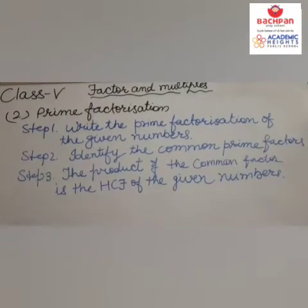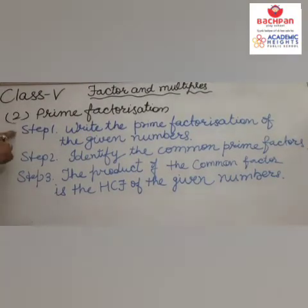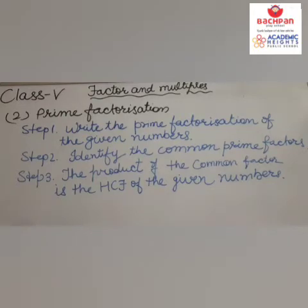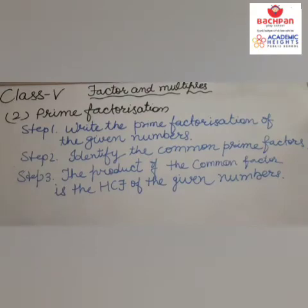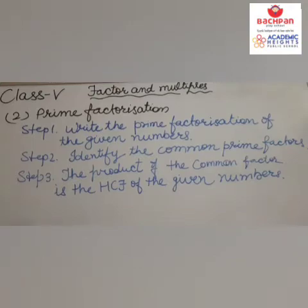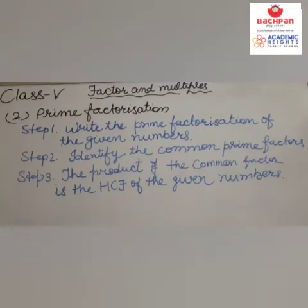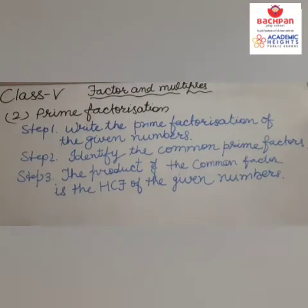Now let's move to the next method, which is prime factorization. There are three steps to follow. The first step is: write the prime factorization of the given numbers. The second step is: identify the common prime factors — circle the common factors. The third step is: the product of all the common prime factors is the HCF of the given numbers. So multiply the circled common factors to get the HCF.